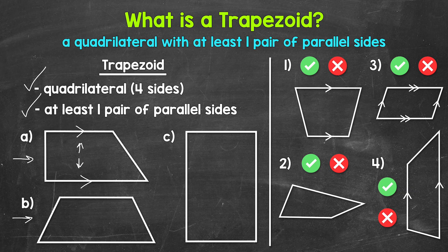Moving on to example B right here, we can see that we have a quadrilateral with one pair of parallel sides — these sides right here. So we have another trapezoid.